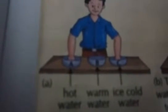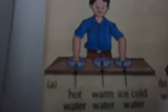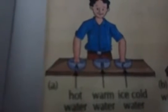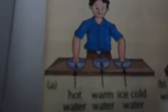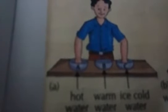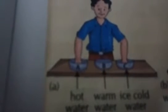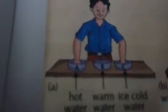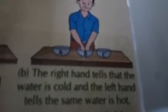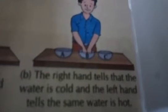Let us take three bowls, mark them A, B and C. We should pour some hot water in bowl A, warm water in the bowl B, and ice cold water in the bowl C. Now we should dip the fingers of our right hand in bowl A and the fingers of our left hand in bowl C for some time. Then put both the hands simultaneously in bowl B.